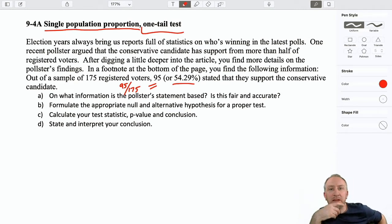After digging a little deeper you find more details on the pollster's findings and a footnote at the bottom of the page probably hidden in very small little print down there. You see that out of a sample of 175 registered voters, 95 of them, which translates to 54.29%, stated that they support their conservative candidate. Okay, so the first question that I often find when we go through proportions is how do I know if I'm looking at a proportion or just an average percentage?